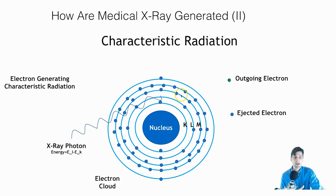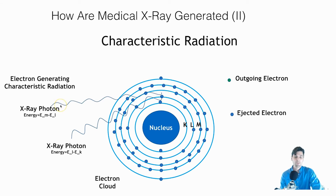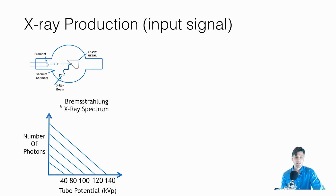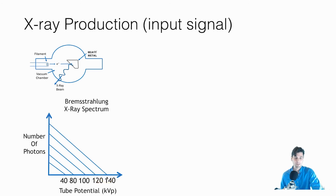You could also have a transition from the M shell to the L shell, giving another characteristic energy. It's called characteristic radiation because all the photons share that same characteristic — one given energy per transition. So you could have one or two specific characteristic energies. If we had just Bremsstrahlung radiation without any filtration, the x-ray spectrum would look like a straight line: more x-ray photons at lower energies and fewer at higher energies, because it's less likely for an electron to transfer all of its energy to a photon.